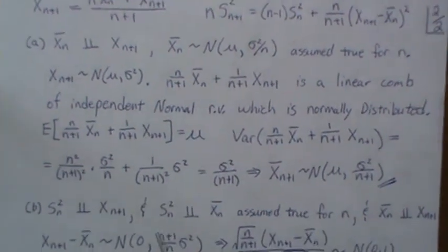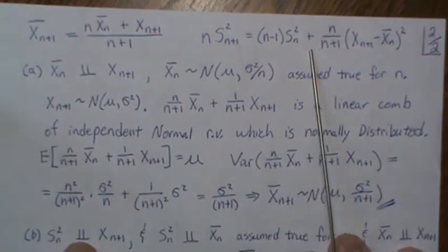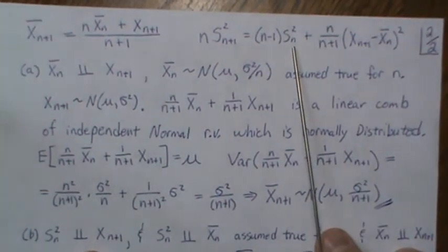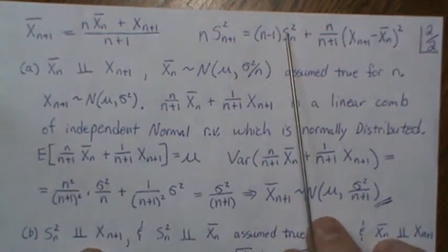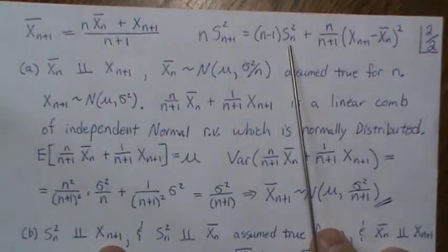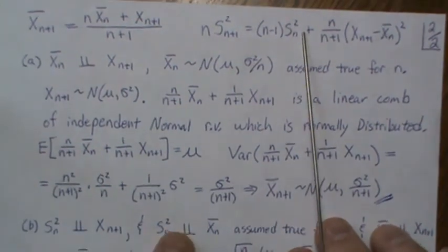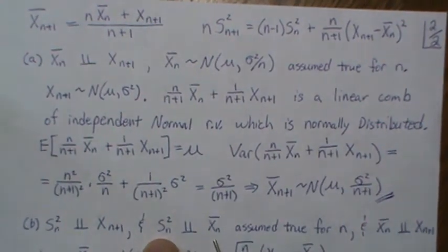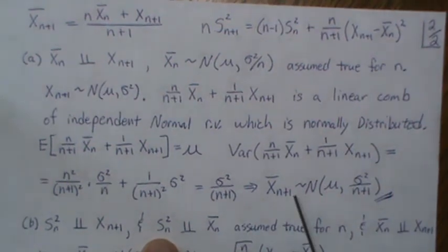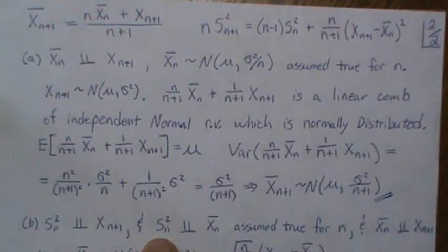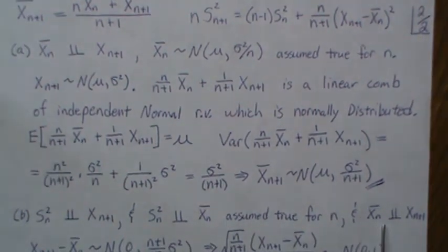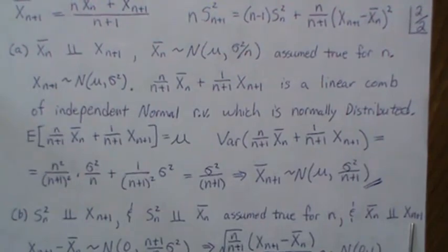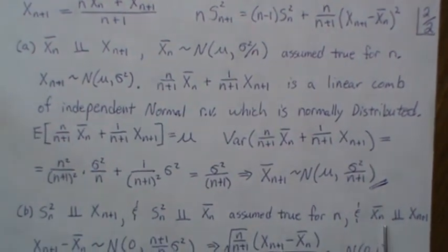For part (b), the (n+1)th observation is independent of the first n observations, so it's independent of the sample variance S_n². By the induction hypothesis, the sample mean X_n bar and the sample variance S_n² are independent. Additionally, X_n bar and X_{n+1} are independent.